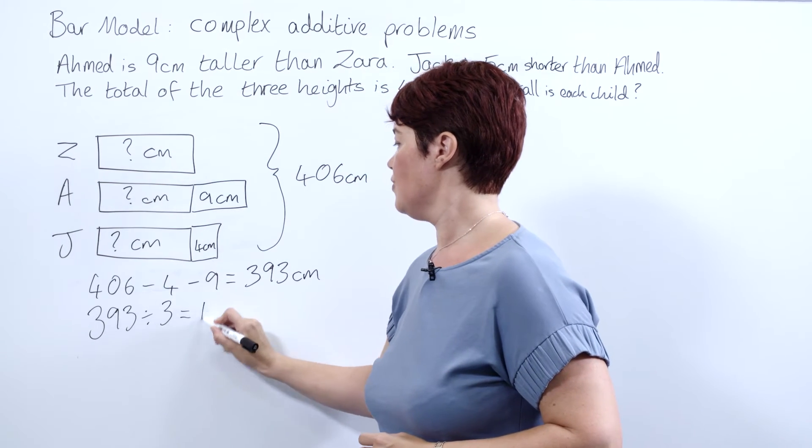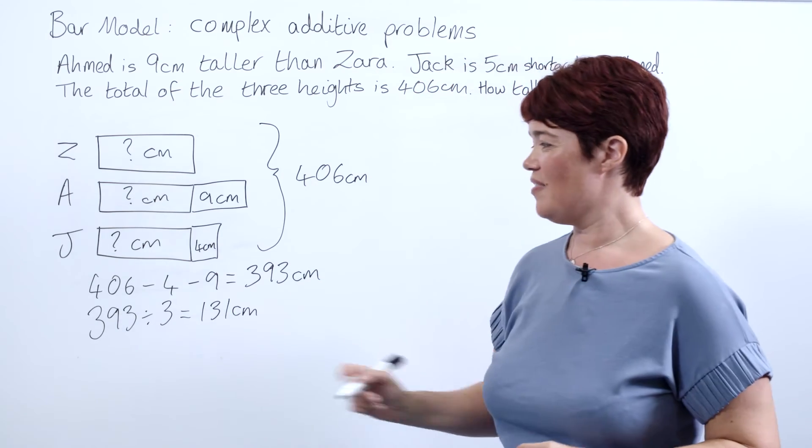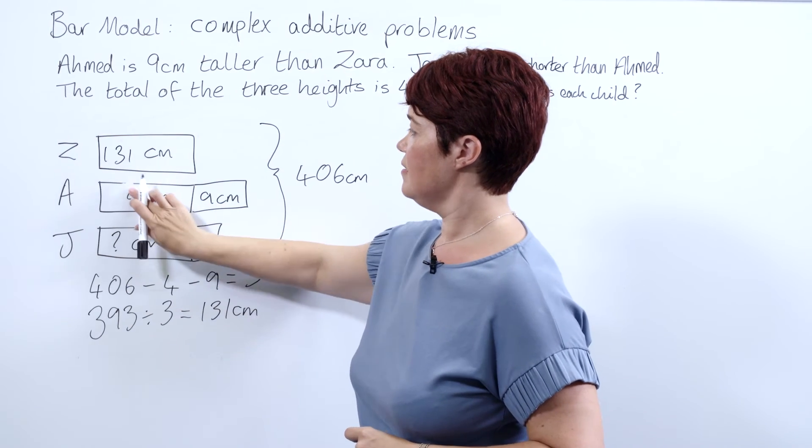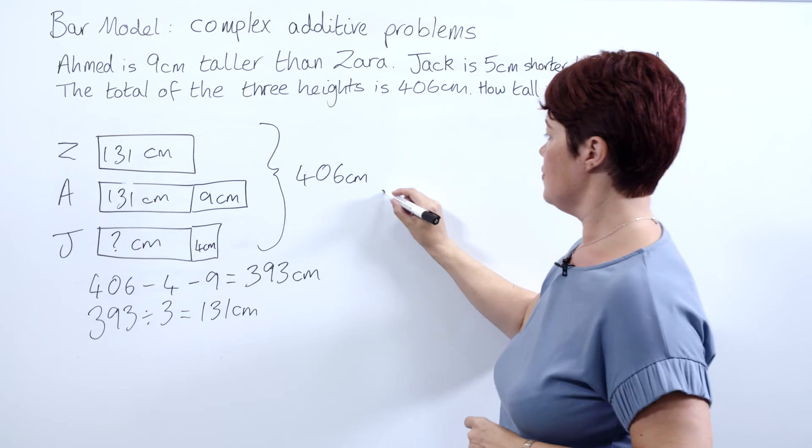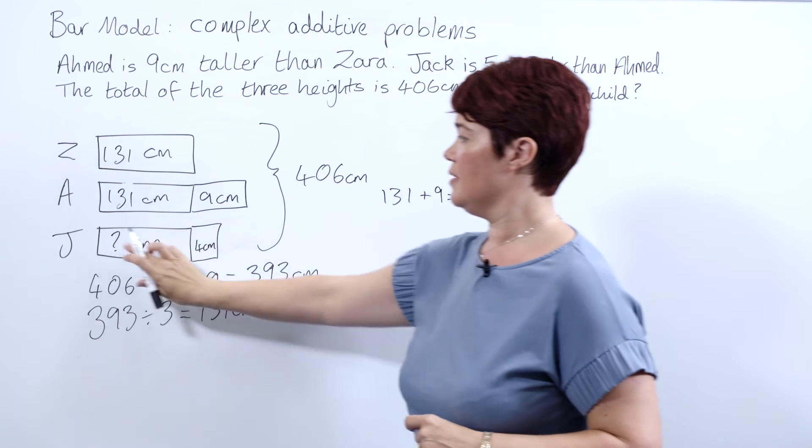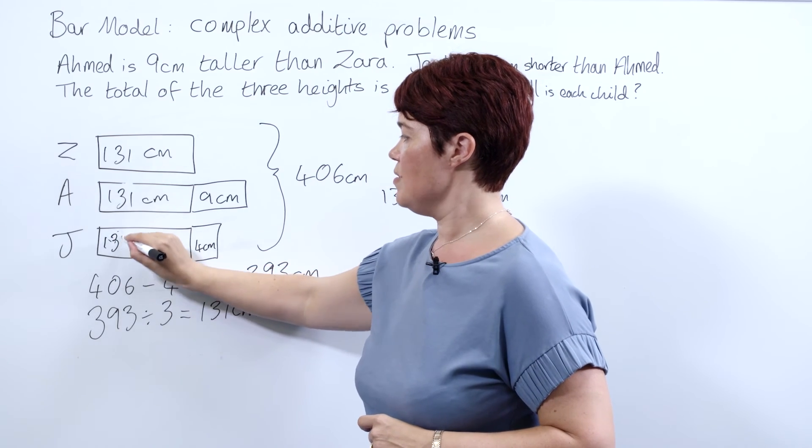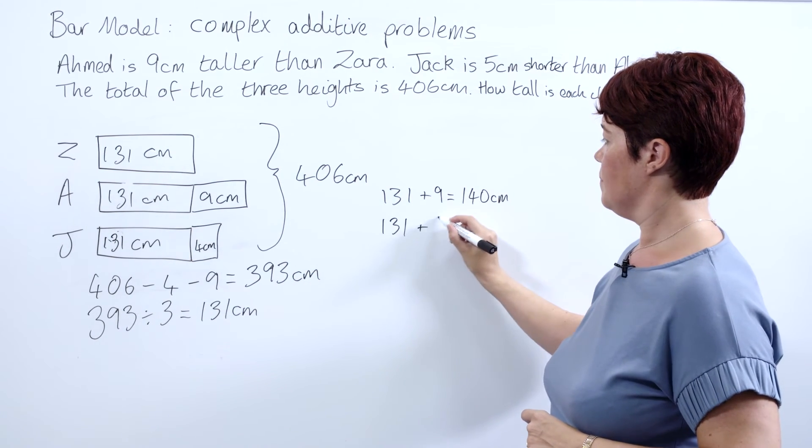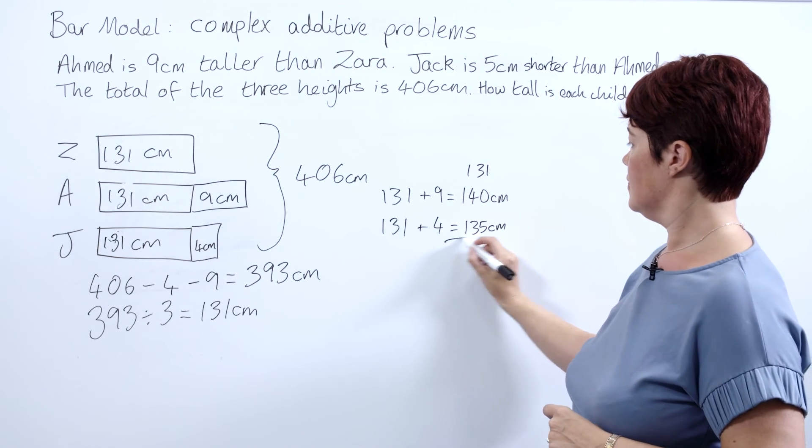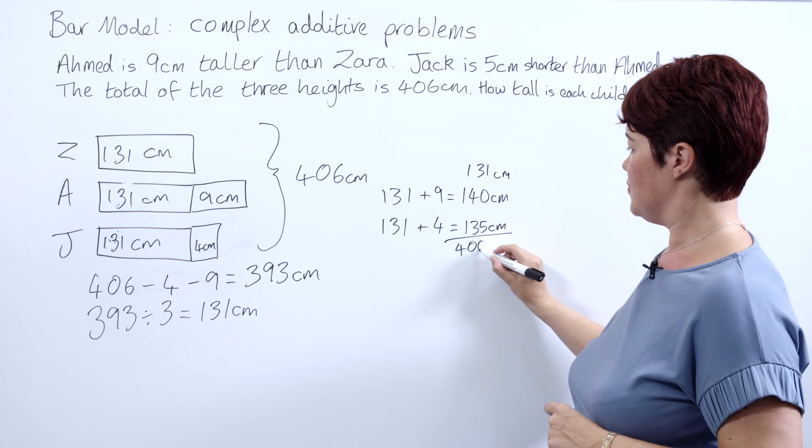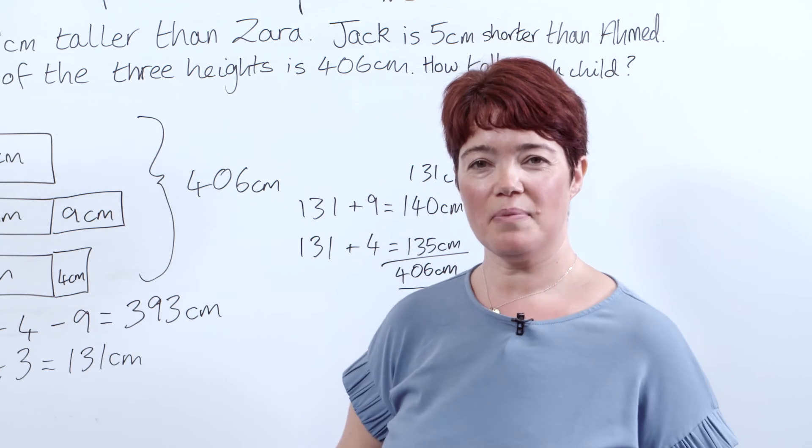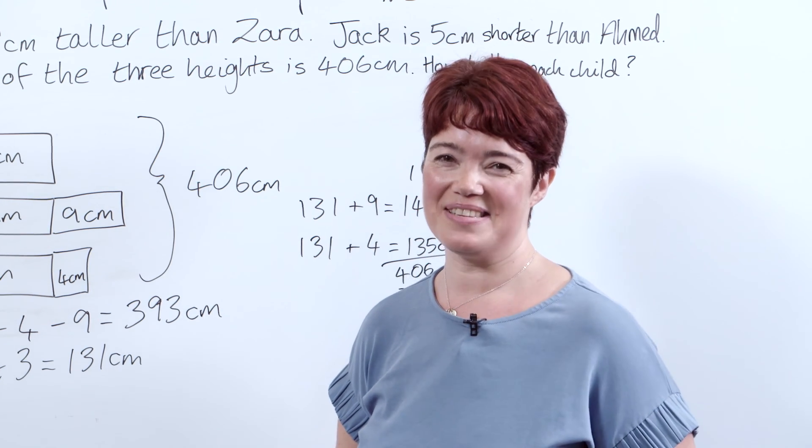That's our unknown. We can now put this back into our bar model. So Zara is 131 centimeters. Ahmed is 131 plus the 9, which gives us 140 centimeters tall. Jack is 131 plus our 4 centimeters, so Jack is 135 centimeters. Now I would encourage the children to check that this adds up to 406 centimeters just so they can see whether they're correct. And that's how we'd use our bar model to solve really quite complex comparison problems.